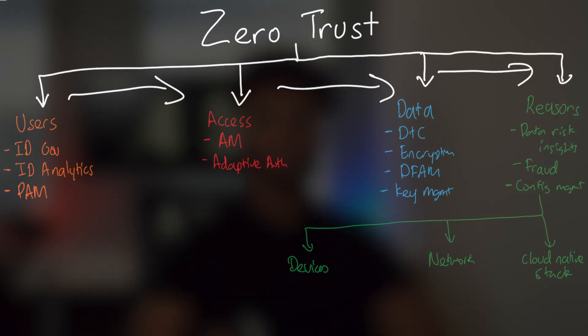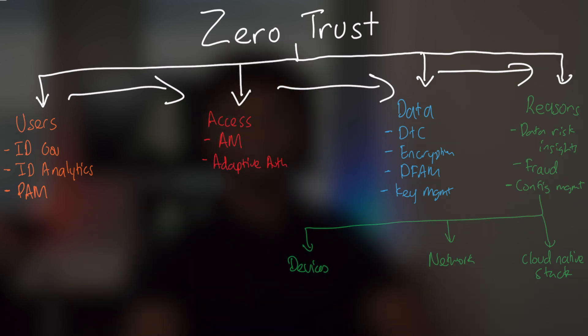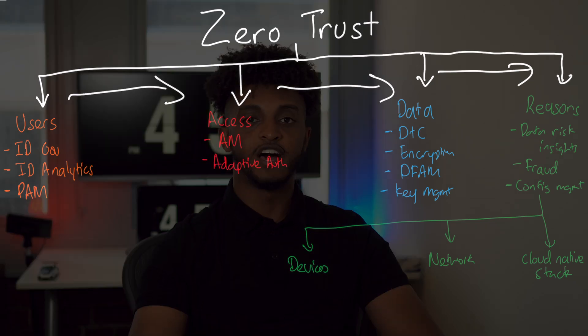So here are all the 12 security controls that we see most organizations are applying for their zero trust implementations. I hope this video was able to provide some value in regards to zero trust. If it did, please make sure to support this channel by subscribing and liking this video. Thank you so much and see you on the next one. Bye.